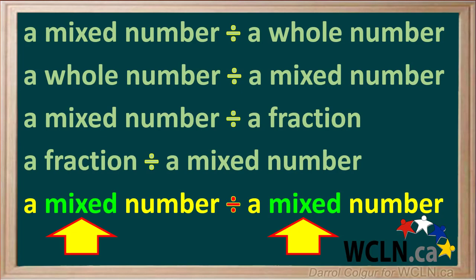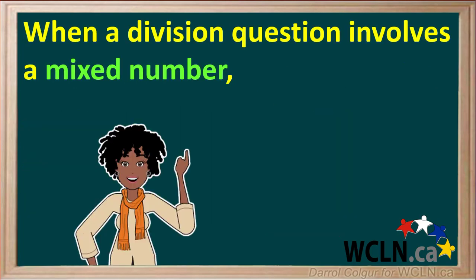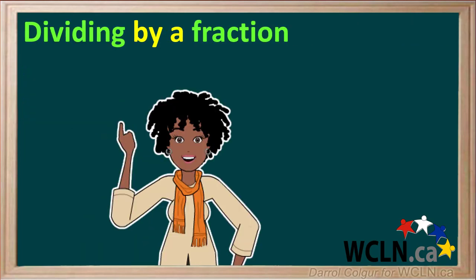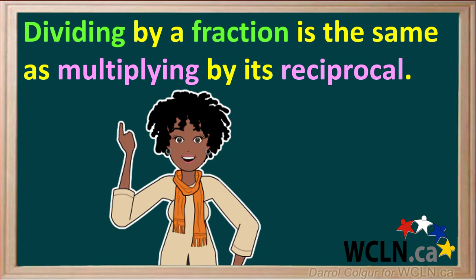When working with mixed numbers, there are two rules we always need to remember. The first rule is: any time a division question involves a mixed number, we always start by converting it to an improper fraction. The other rule is that dividing by a fraction is the same as multiplying by its reciprocal. Using these two rules, we can do any divisions involving mixed numbers.